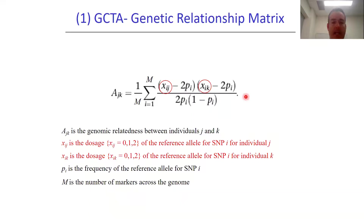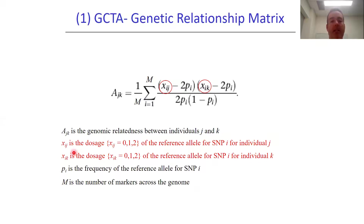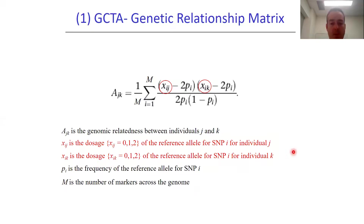Let's look at the formula in more detail, starting with Xij and Xik. Xij is the dosage — so that's 0, 1, or 2 — of the reference allele for SNP i for individual J. Likewise, Xik is the dosage, 0, 1, or 2, of the reference allele for SNP i for individual K.